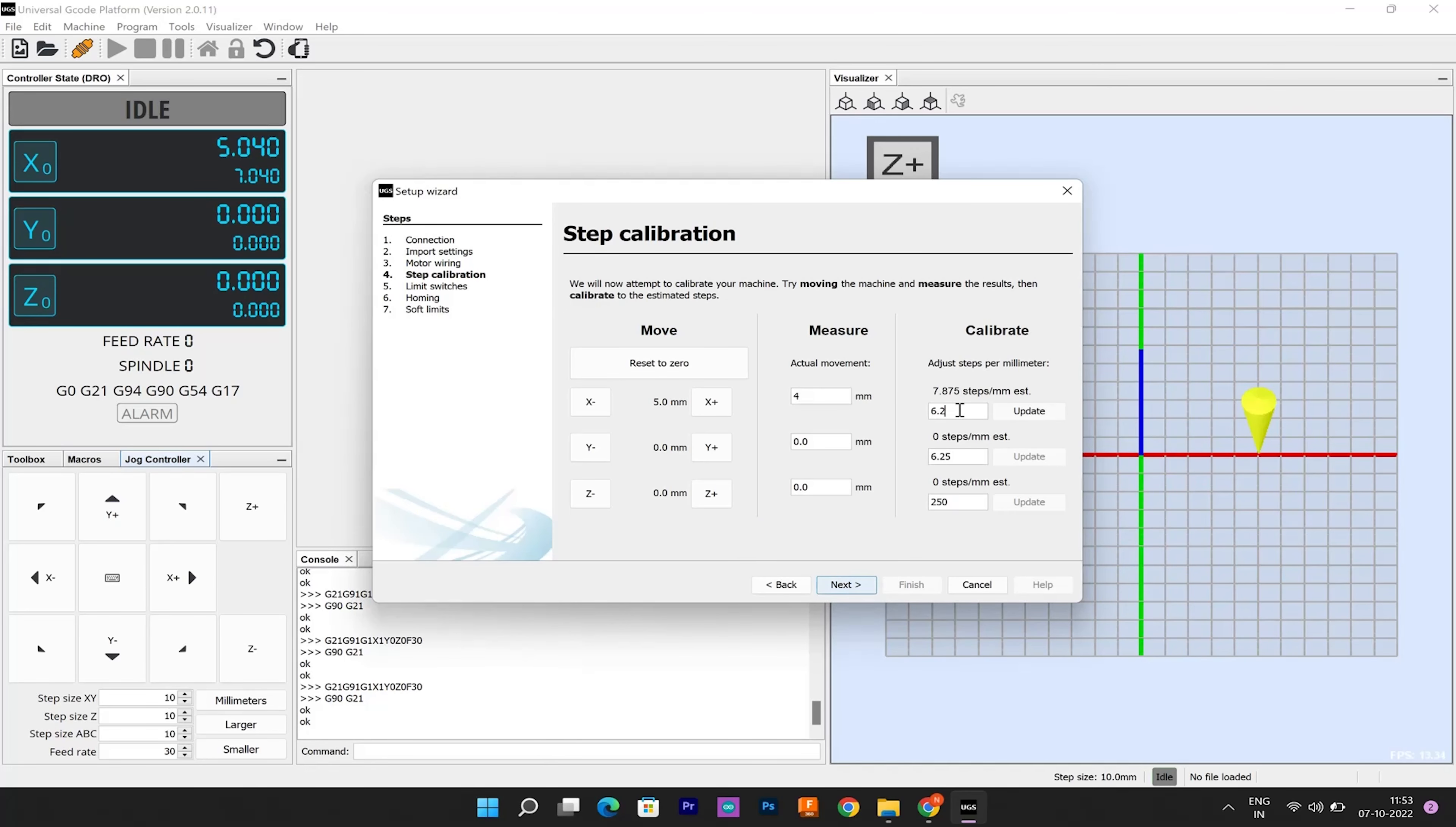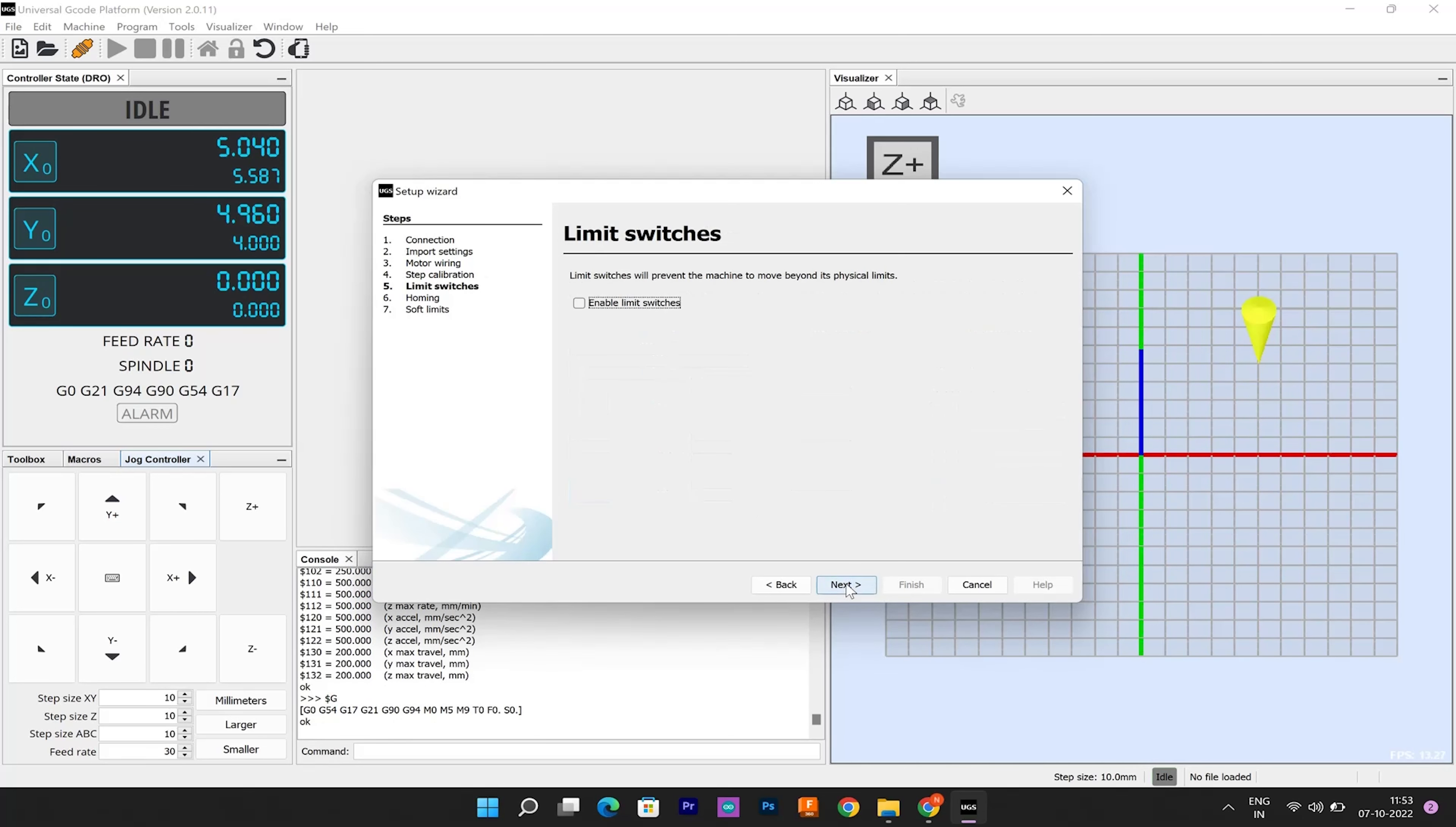Based on this, the wizard will calculate and tell us what value we should change in steps per millimeter parameter. So we have done the same in the case of Y-axis stepper also. We didn't use any limit switches so we can skip that part.